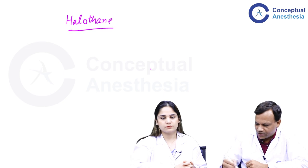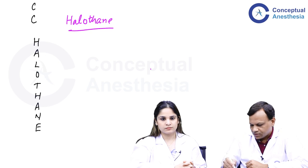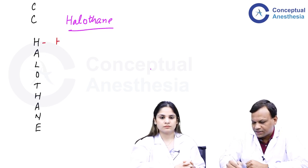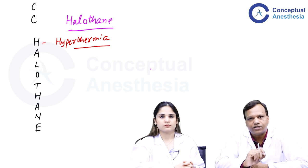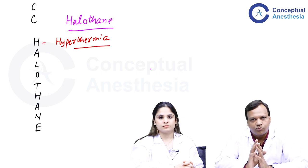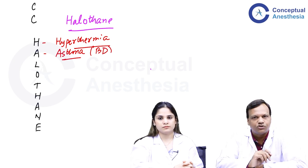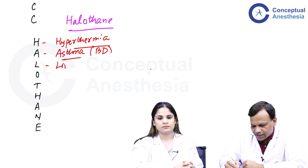The next drug is halothane. Although not commonly used nowadays, it is still examined. Using the mnemonic H-A-L-O-T-H-A-N-E with properties C and C added: H for hyperthermia — halothane can induce malignant hyperthermia, more commonly than other inhalational agents. Succinylcholine (a neuromuscular junction drug) is also involved. Halothane is a good drug for asthmatic patients because it is a potent bronchodilator producing bronchodilation.